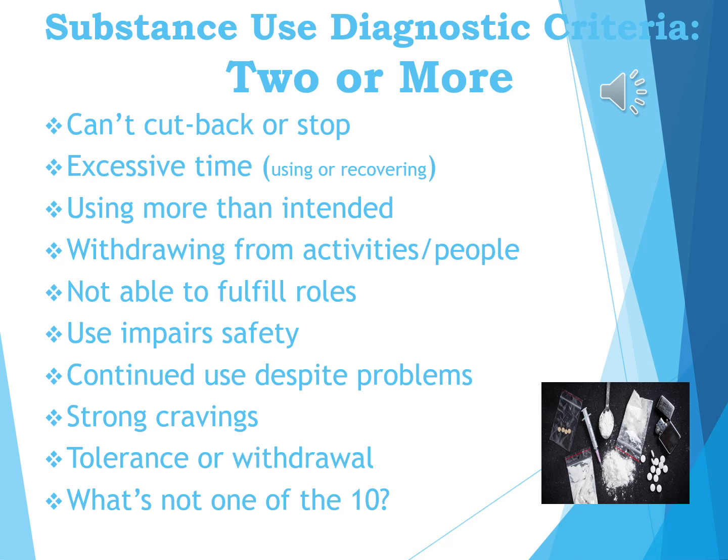Additional criteria include: not able to fulfill your roles — as a parent, caregiver, student, worker, or volunteer; use that impairs safety, for example driving while intoxicated; continued use despite very serious problems; strong cravings; tolerance from the drug; or having withdrawal symptoms when you don't have the drug in your system. Two or more would suggest a problem. If you find you have two or more of these in your life, consider making an appointment with a counselor.